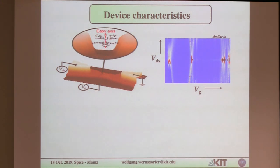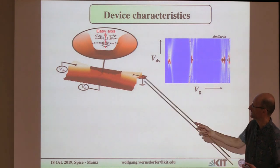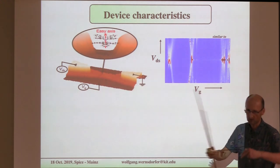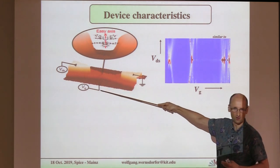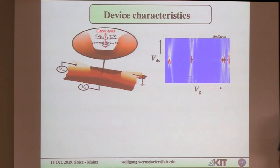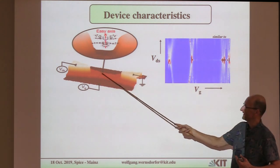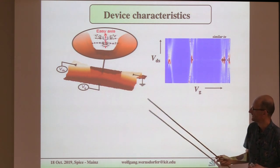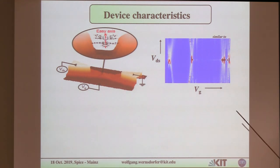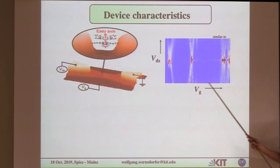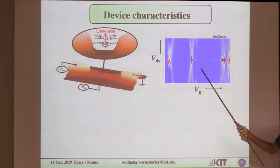Experimentally, we use electromigration. We just have some gold fingers, send current through, and open a gap. The important thing is that we have a gate below — most break junctions don't have a gate, but we need it to find a nice working point. We simply open the gap, heat a little bit to 20–30 Kelvin, a molecule diffuses in, and then we cool down. Then we simply scan source-drain voltages and gate voltages — these two parameters — and measure differential conductance.